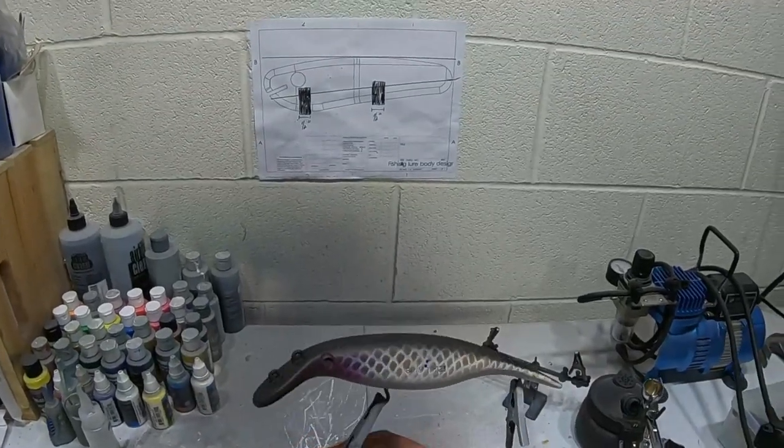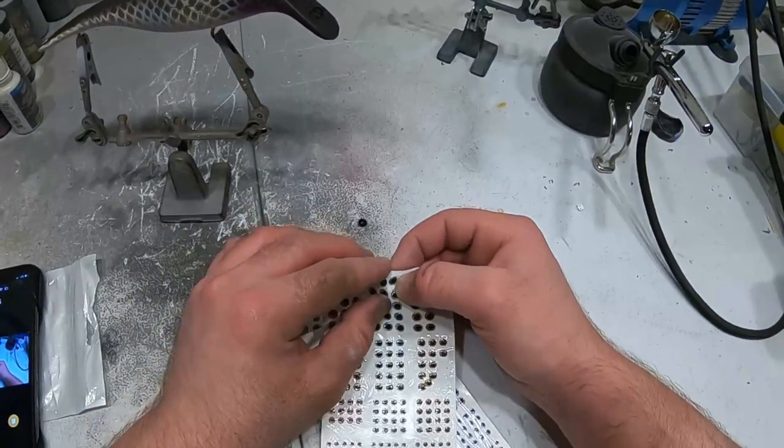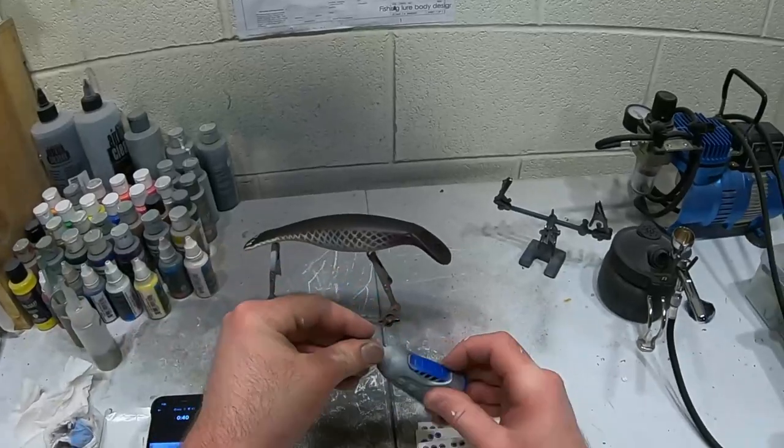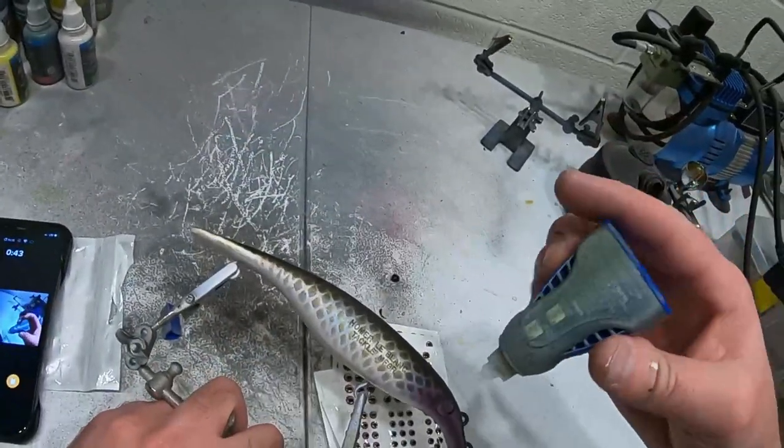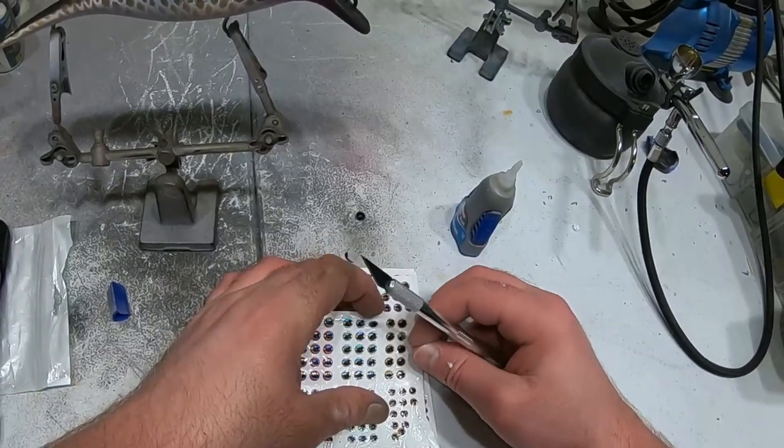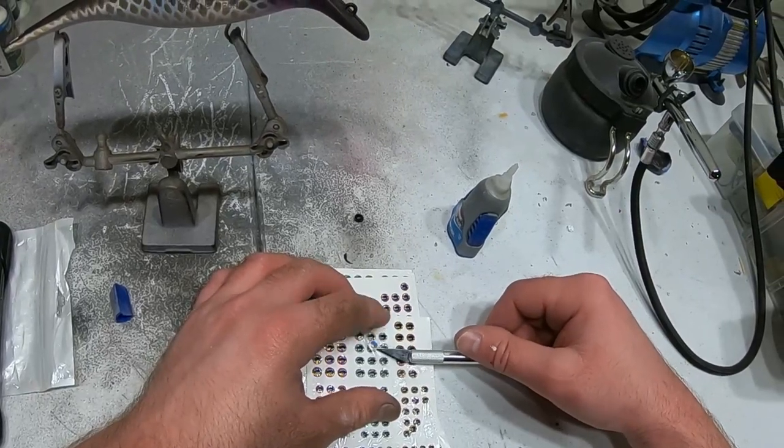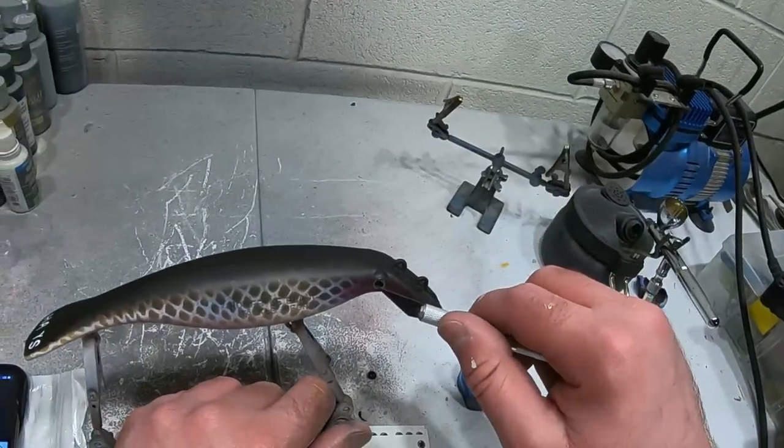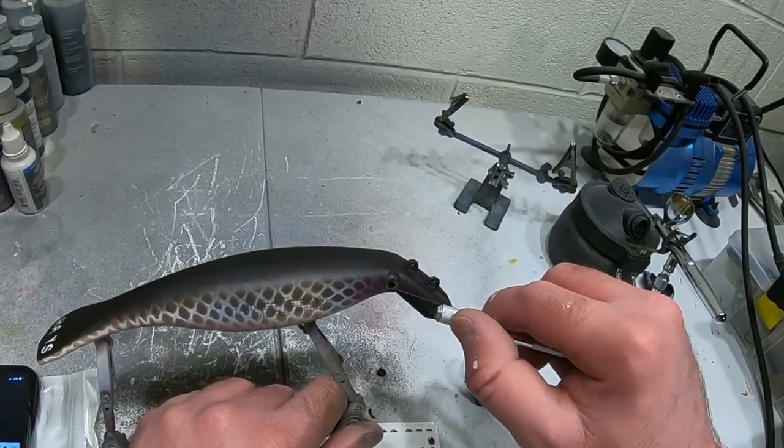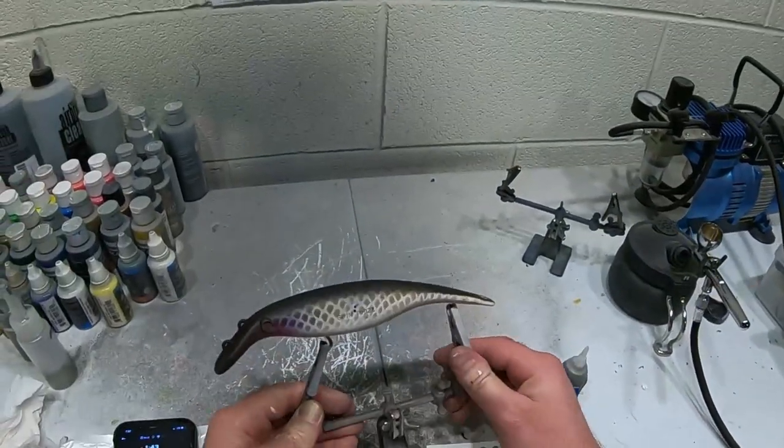Now I'm just choosing out some eyes. I'm going to go with these kind of clearish yellow eyes and then I'll get them glued in here. So just a little bit of super glue and a utility knife always helps to kind of set them in place with these small eyes. We'll do the other side.